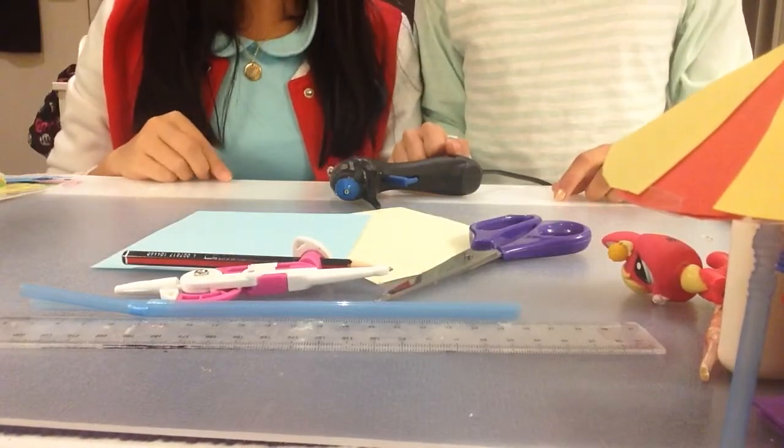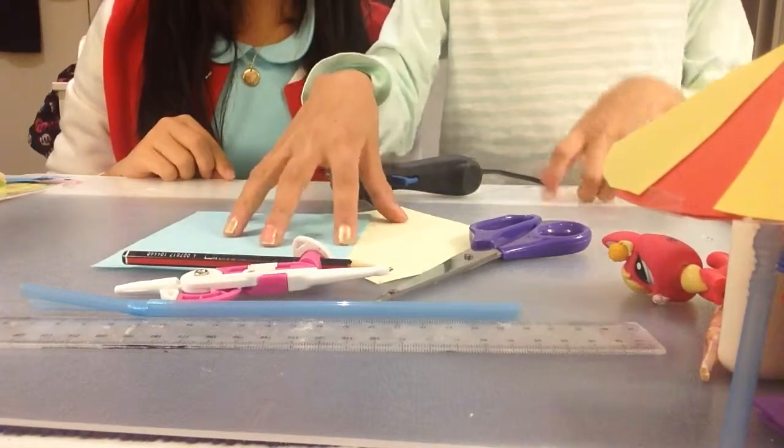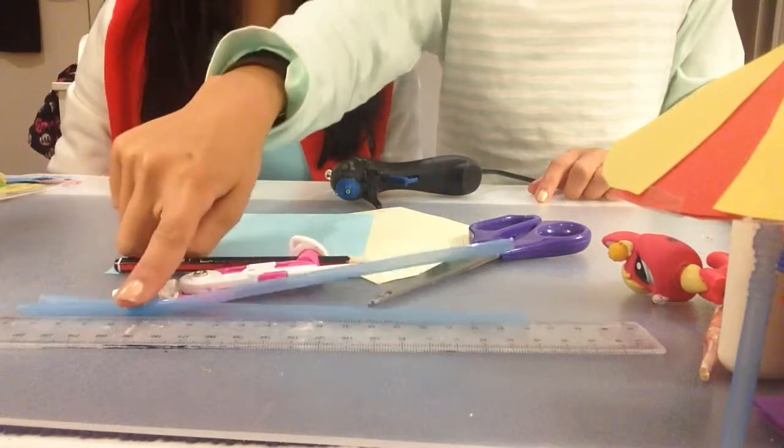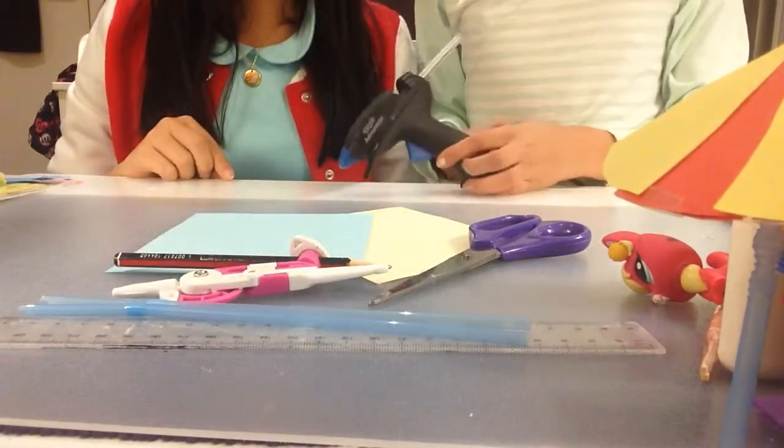To make your umbrella, you will need some paper, scissors, a compass and pencil, some straws, a ruler, and a hot glue gun.